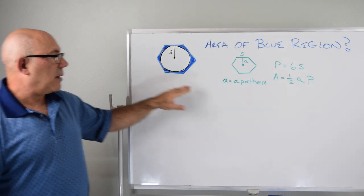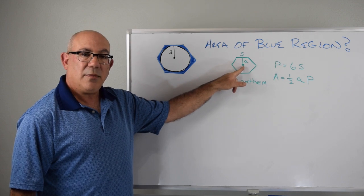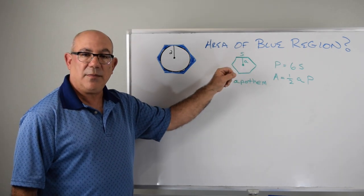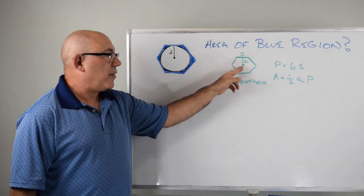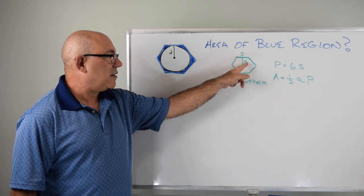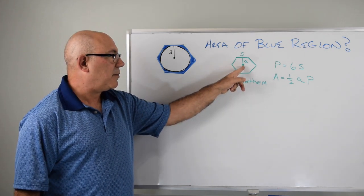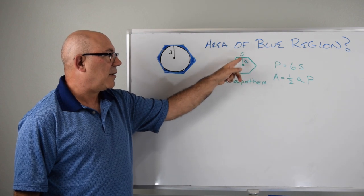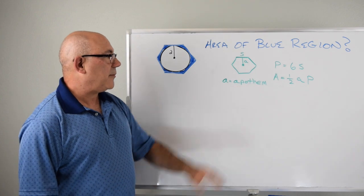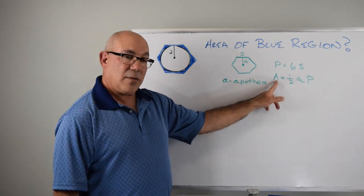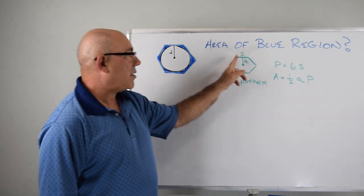For any regular polygon — and regular means all the sides are the same length and the angles are the same — there is a dimension called the apothem. The apothem is the distance from the center of the polygon perpendicular to one of the edges. And the area of a regular polygon is one half the apothem times the perimeter of the polygon.